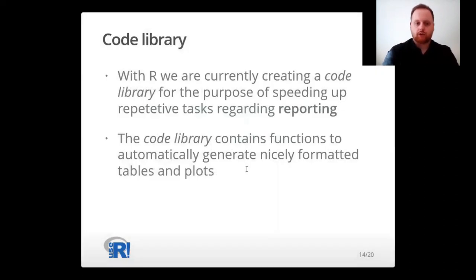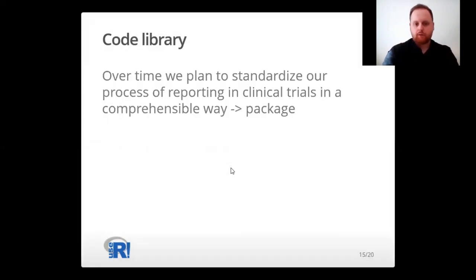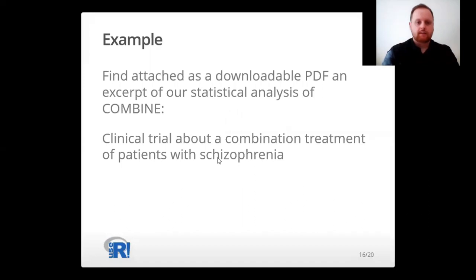We are also currently creating a code library to speed up repetitive reporting tasks. The library contains functions to automatically generate nicely formatted tables and plots, and we usually use packages like kable, pander, and ggplot for that. Over time we plan to standardize our reporting process in clinical trials and publish all of these functions as a free package for everybody to use. An example of how this looks in a final analysis report is provided as a downloadable resource — an excerpt from our statistical analysis of COMBINE, a clinical trial about combination treatment of patients with schizophrenia.